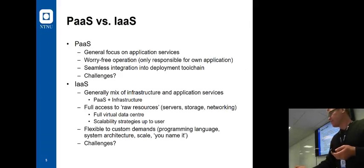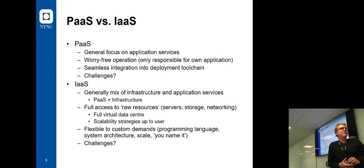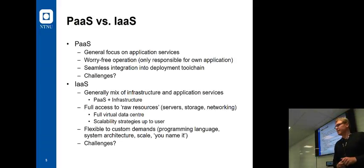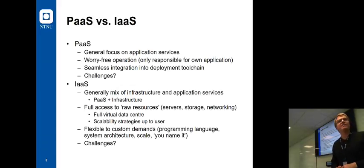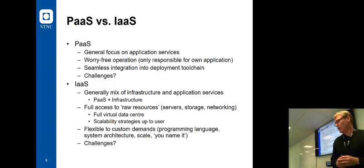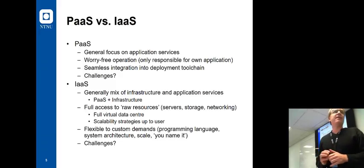To summarize the difference: PaaS generally focuses on the application level — it's the worry-free operation style, you just deploy and hopefully forget about it, relying on the vendor's goodwill. IaaS is generally a mix of PaaS plus infrastructure, but you literally have access to the raw resources to a considerable extent — in fact sometimes to a stronger extent compared to your own data center because you have so much more power at hand.